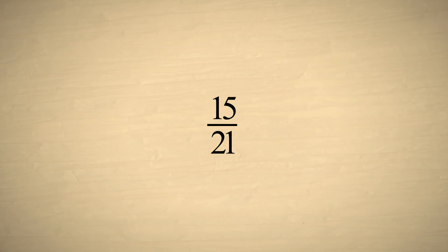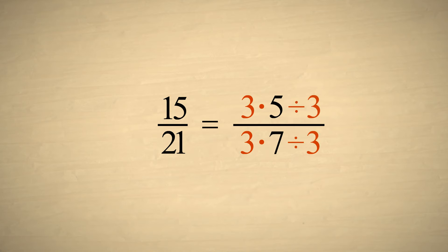For example, say we wish to determine if the fraction fifteen-twenty-firsts can be reduced. Factoring the numerator and denominator, we can see that they both have a factor of three in common. So we can divide the top and bottom of this fraction by three. Of course, this has the same effect as simply removing a factor of three from the top and bottom. In other words, we cancel out a factor of three in the numerator and denominator. This reduces the fraction to five-sevenths.